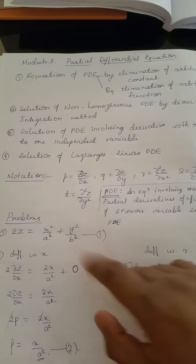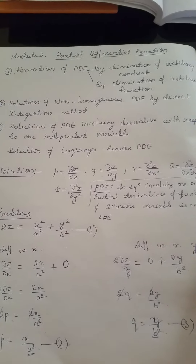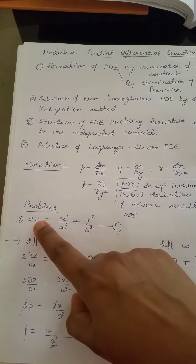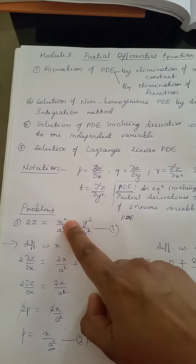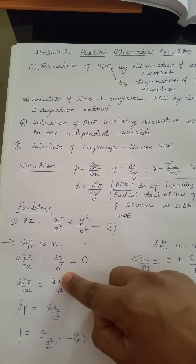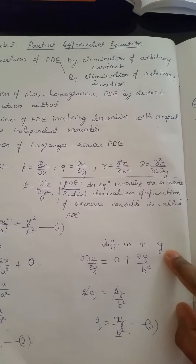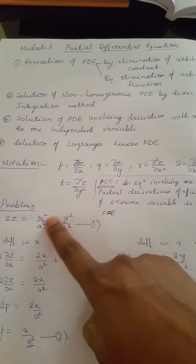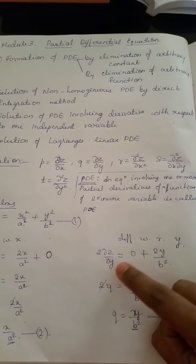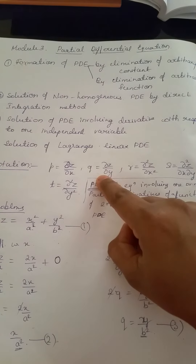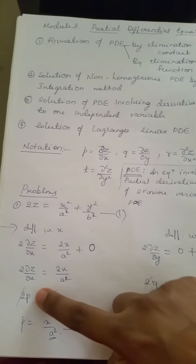So how do we eliminate these two arbitrary constants? We differentiate with respect to x and y. Differentiating with respect to x: ∂z/∂x = x/a², and the y² term becomes zero. Similarly, differentiating with respect to y: ∂z/∂y = y/b², and the x² term becomes zero. We use the notation p for ∂z/∂x and q for ∂z/∂y.